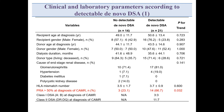There were no significant differences in the baseline characteristics between the no-detectable de novo DSA and detectable de novo DSA groups. However, the proportion of PRA more than 50% in the detectable DSA group was significantly higher compared to the no-detectable DSA group.